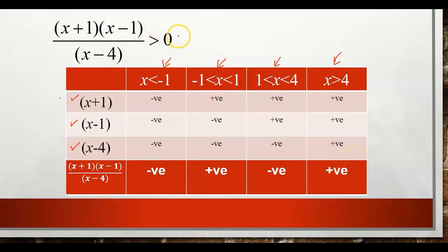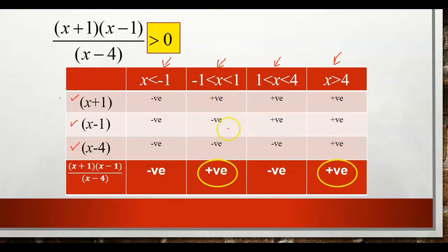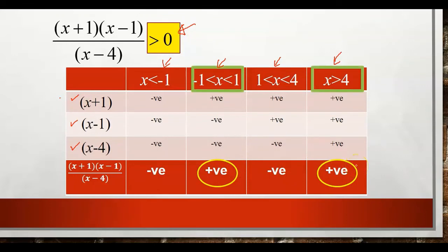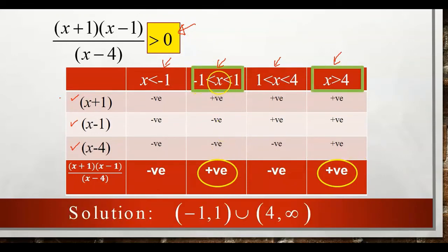Now we identify which intervals make the operation greater than 0 by choosing the positive intervals. The positive intervals are x between negative 1 and 1, and x greater than 4. So the answer written in interval form is (−1, 1) union (4, ∞).